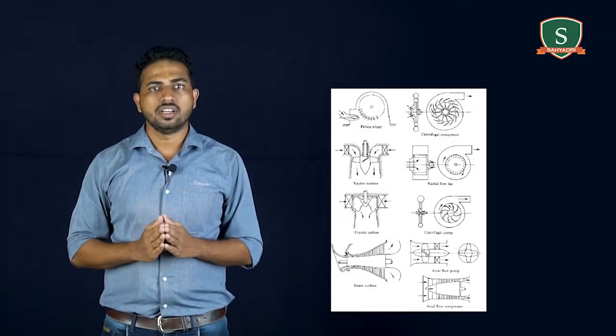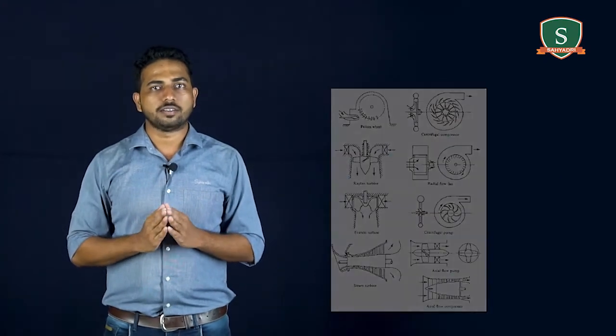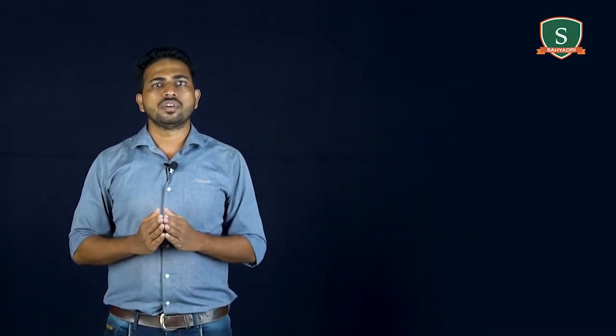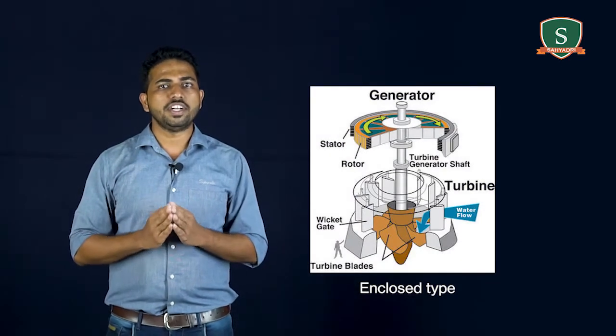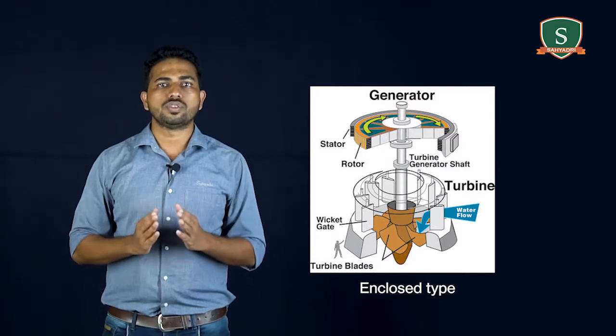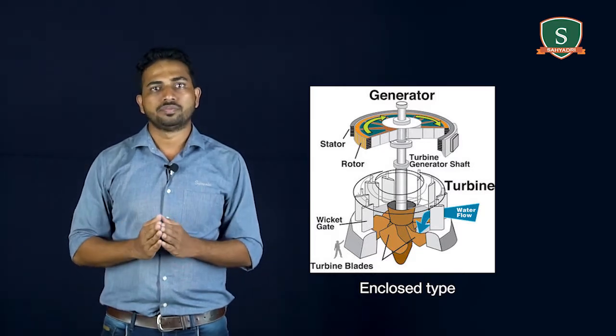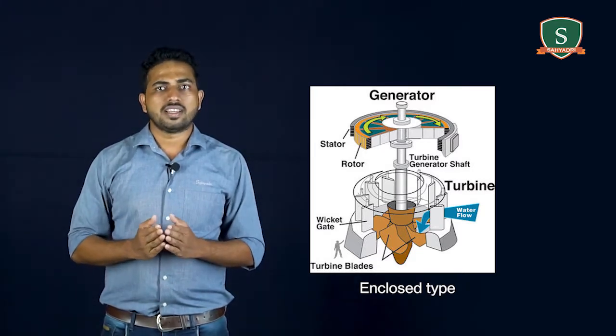First classification according to the quantity of working fluid handled. There are two types. Enclosed type. This type of machines handles definite quantity of working fluid passing through a housing or casing per unit time. Examples are turbines and pumps.